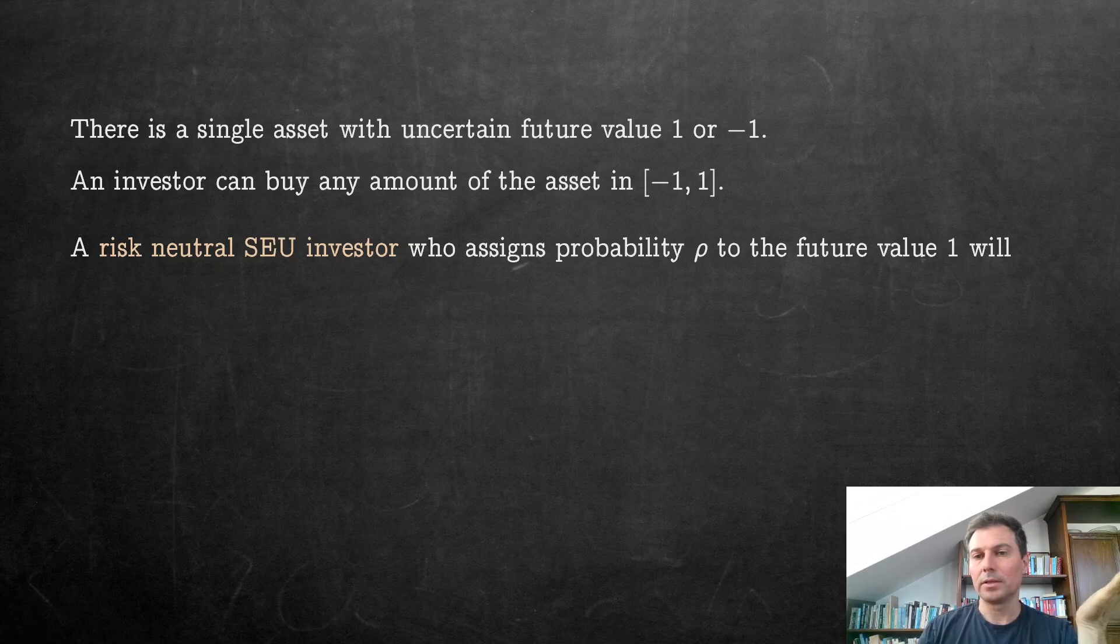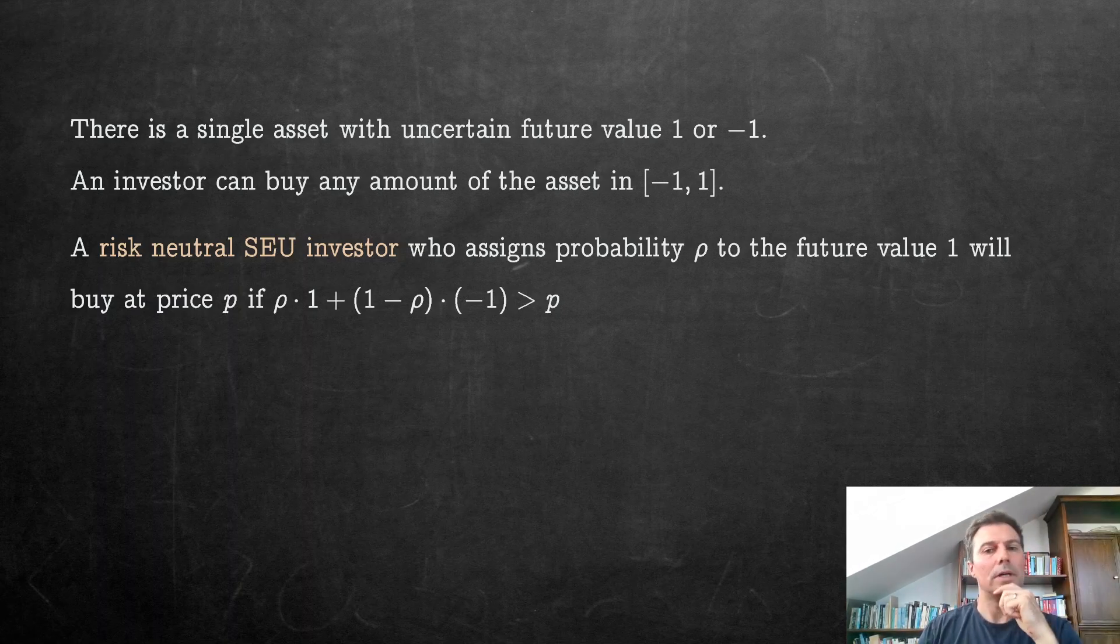This person would assign a probability ρ to the future value 1, or behave as if, and then this person will compute the expected value, this ρ times 1 plus 1 minus ρ times minus 1. If that expected value of this asset exceeds the current price, then this person would buy, and if it is below the price, this person would sell. Only if this is exactly equal to this price would this person potentially do nothing or do whatever.